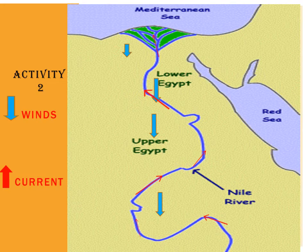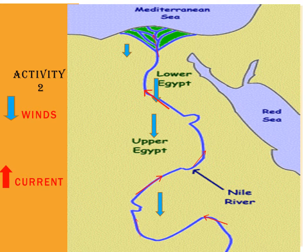Next is Activity 2. The blue arrows represent the prevailing winds, which always blow from the northern region to the southern region of Egypt. The river currents flow from the southern region to the northern region — and that is exactly what the sailors made use of. They used the prevailing winds travelling from north to south, and when returning they used the water currents.